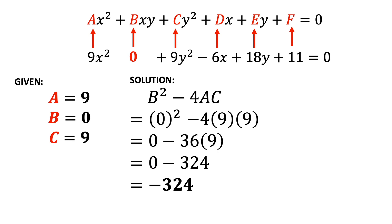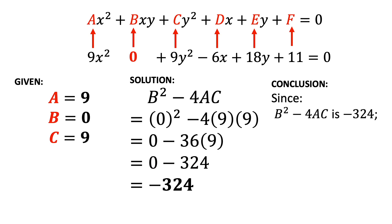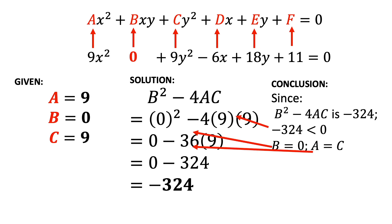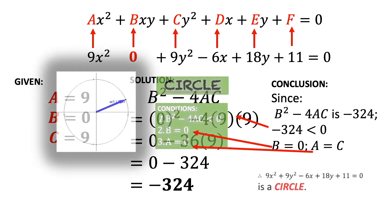The last step is to interpret the computed discriminant and the numerical values of A, B, and C. Since our computed B² - 4AC is negative 324, and negative 324 is obviously less than 0, while the numerical value of B is 0, and A and C have similar numerical value which is 9. Therefore, 9x² + 9y² - 6x + 18y + 11 = 0 is a circle.